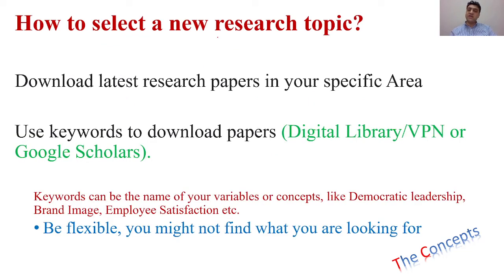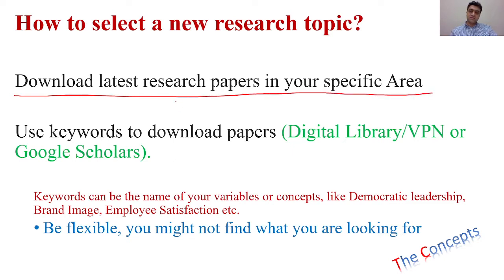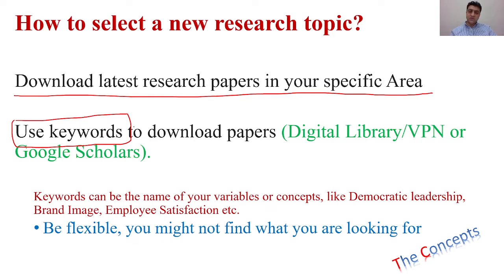The next thing you need to do is, once you have decided which area you want to do your research in, download the latest research papers or theses in your area of research. Your specific area should be further refined into different concepts, and those concepts should be used as keywords. These keywords are very useful to download papers in your area of research.